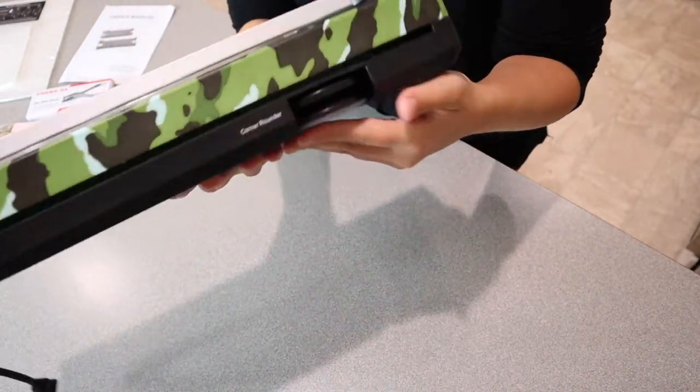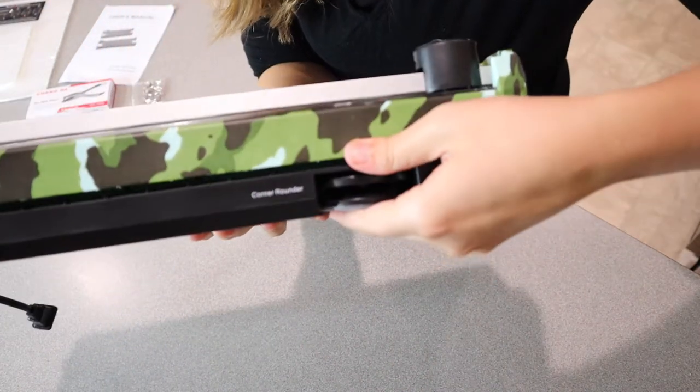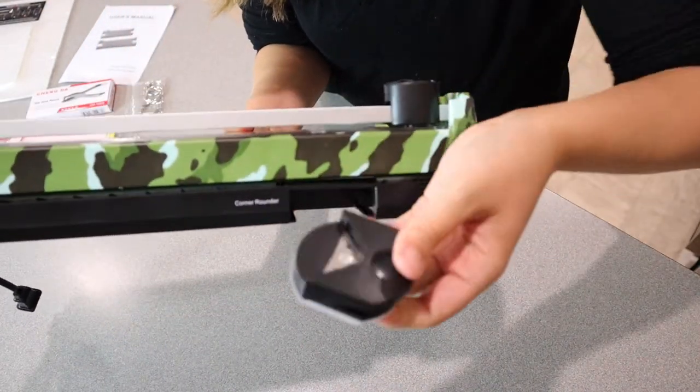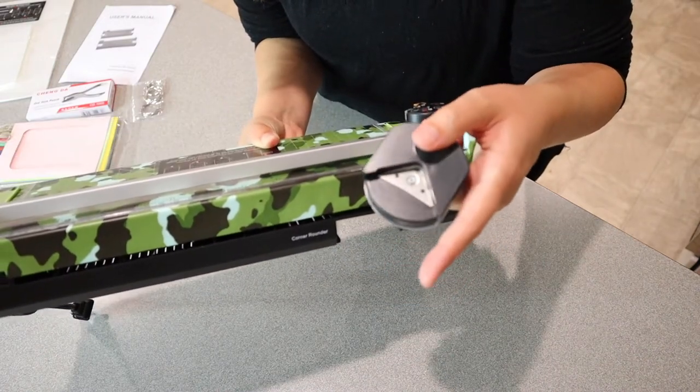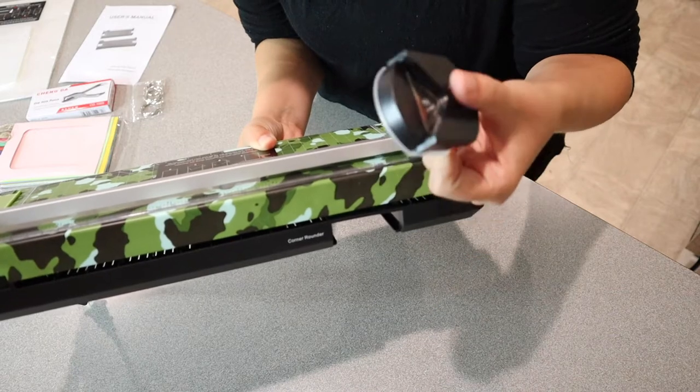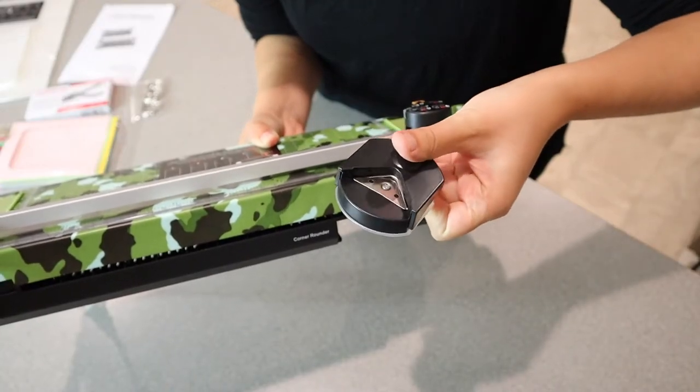And then right here underneath, kind of behind, is a little edge rounder or corner rounder. When you laminate anything, the edges are going to be very pokey, and so it's kind of a must to have a little edge rounder or corner rounder.